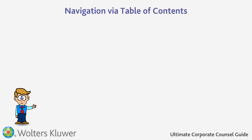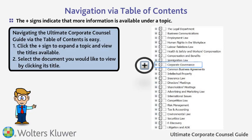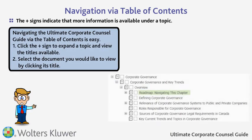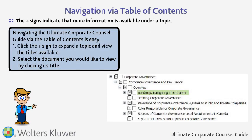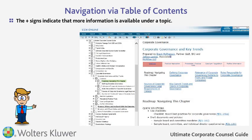Navigating the Ultimate Corporate Counsel Guide via the table of contents is easy. The plus signs indicate that more information is available under a topic. Simply click the plus sign to expand the topic and view the titles available, then select the document you would like to view by clicking its title.